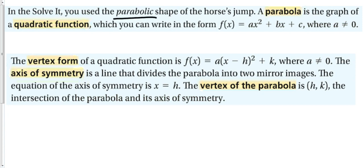If we continue that graph it forms the shape of a parabola. A parabola is the graph of a quadratic function, which you can write in the form f(x) = ax² + bx + c, where a ≠ 0. The reason a can't be zero is because if it were, the ax² term disappears and we'd just have a line, bx + c.